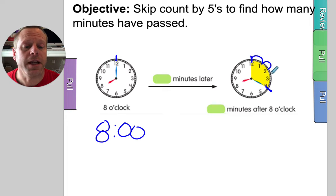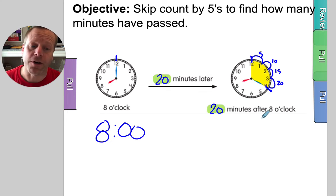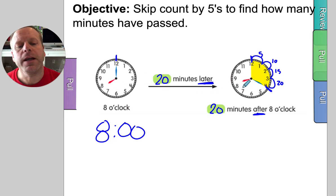5, 10, 15, 20. So 20 minutes after eight o'clock is this time. It's 20 minutes later or after - those words mean the same. Here's eight, 20 minutes after eight. You'll see a lot of movement with the blue hand and you'll only see a little smidge of movement with that red hand. We're going to be doing a whole bunch of these today.